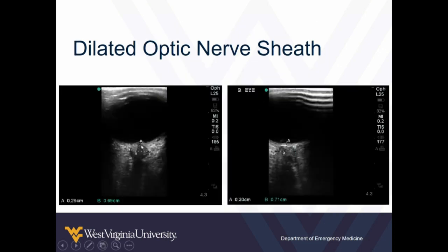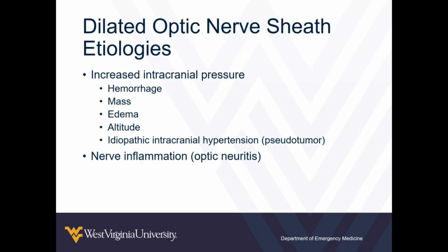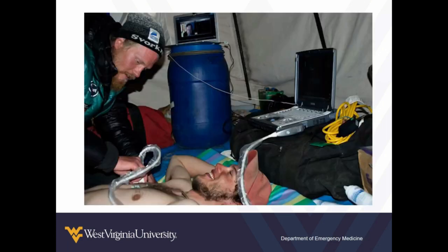Just a couple more examples: here we maybe see a little bit of bulging up, we go back and measure the diameter — it's almost seven millimeters. Same thing here; we see the diameter is increased. So here we think we have papilledema or increased pressure for one reason or another. Why might this be dilated? Most of the time it means there's increased intracranial pressure for lots of reasons — hemorrhage, mass, edema, altitude. You can take ultrasound almost anywhere — people take it to Everest to look for signs of intracranial pressure elevation. And then idiopathic intracranial hypertension — this is probably the most common reason I see this in the emergency department, patients with pseudotumor or IIH. It may also be dilated because it's inflamed, like optic neuritis. You still have to correlate what you see on ultrasound with the whole clinical picture.